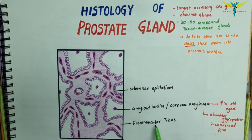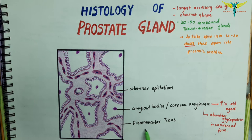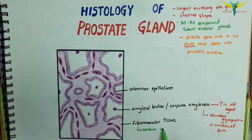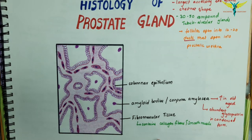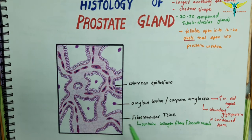The fibromuscular tissue forms a conspicuous feature of prostate sections. It contains collagen fibers and smooth muscles. Within the gland, the fibromuscular tissue forms septa that separate the glandular elements, and these septa are continuous with the fibrous capsule surrounding the prostate. The capsule contains numerous veins and parasympathetic ganglion cells.